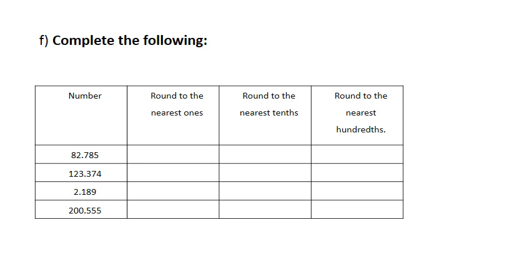In this part, we are asked to round the following numbers. First, to the nearest ones — don't forget to underline the digit. You look just before 7, then you add 1 to the 2; it becomes 83. Everything to the right becomes 0, but those zeros are useless so I don't put them. The second one is 123. 2 stays as it is; the 0 — we're going to add 1, so it will become 201. The same steps for the tenths: you underline the tenth, which is the 7. We have 8 just before 7, so it becomes 82.8.